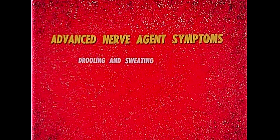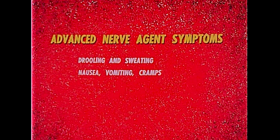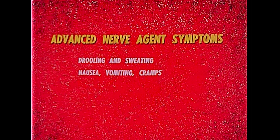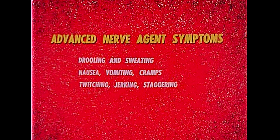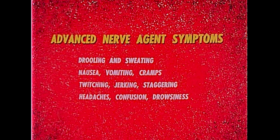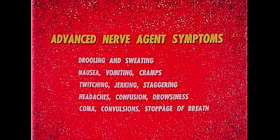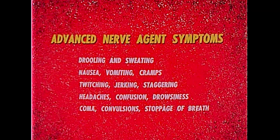Advanced symptoms of nerve agent poisoning include drooling and sweating, nausea, vomiting, or cramps, twitching, jerking, or staggering, headaches, confusion, or drowsiness, coma, convulsions, or stoppage of breathing.